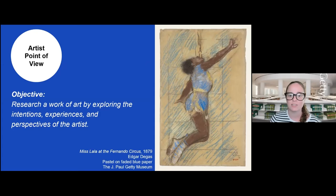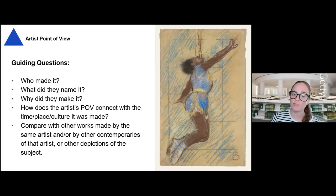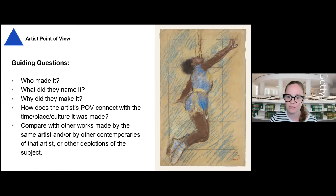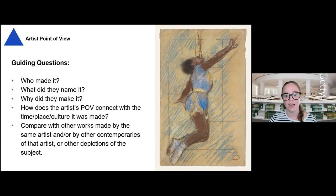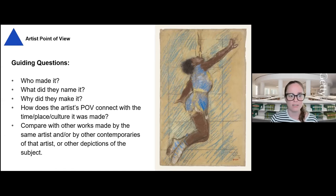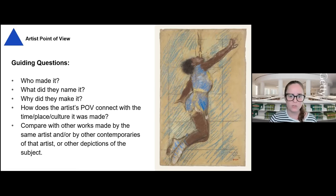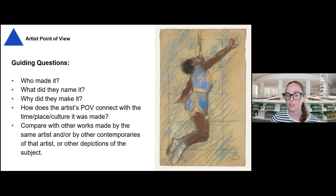When using the artist's point of view to research a work of art, there are several questions we may consider asking to find out more about what that work is about. We can ask the who, what, and why to get started, but we can also consider how the artist's perspectives are impacted by the time, place, and culture it was made. We can compare the work with other works by the same artist or other contemporaries of the time, as well as other depictions of the same subject. I'm going to go through the process of finding answers to many of these questions using familiar strategies you're more than likely already using with your students.